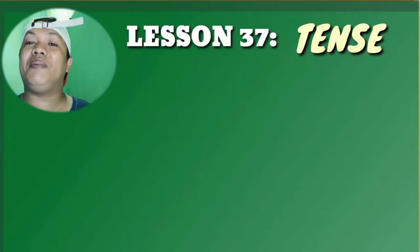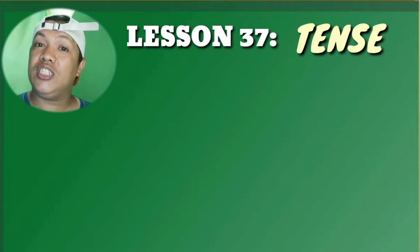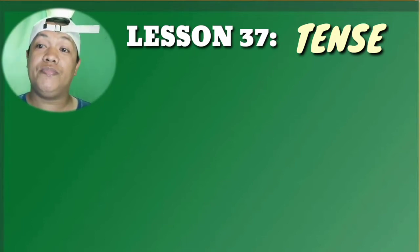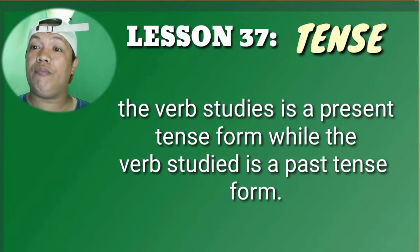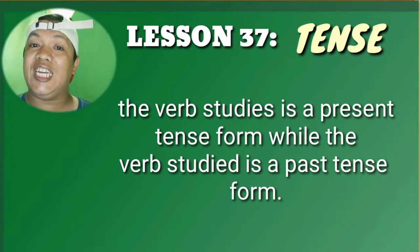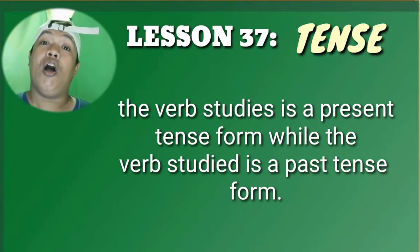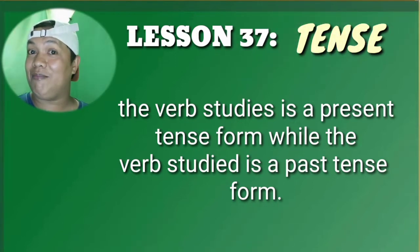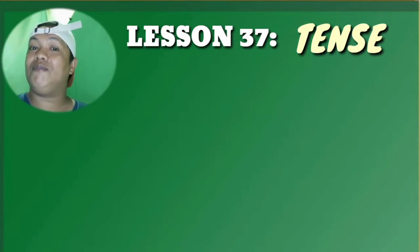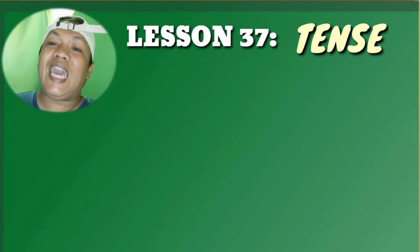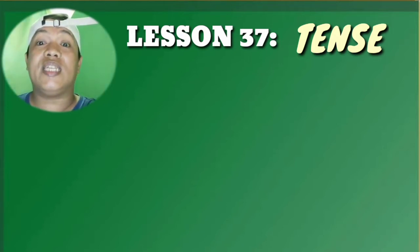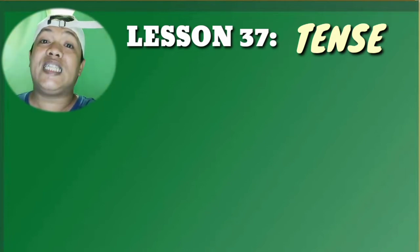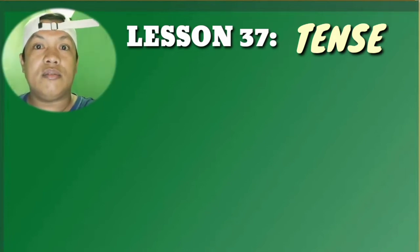The verb of a sentence gives information about the tense of the verb. Speakers of English are generally aware that, for example, the verb 'studies' is in the present tense, while the verb 'studied' is in the past tense. It's important to understand that grammatical tense and real-world time are not necessarily the same.